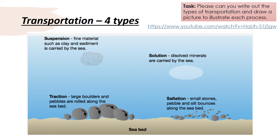Suspension: the fine material such as clay is carried by the sea. And then solution: dissolved minerals are carried by the sea. These processes, like the erosion ones, are exactly the same for rivers — they are very, very important. I've attached a video for you to watch which illustrates these in more detail.